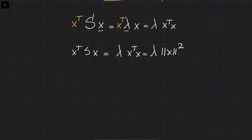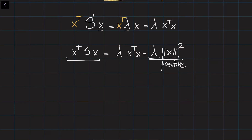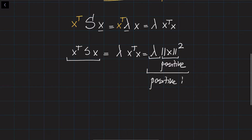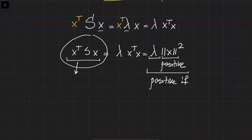On the left-hand side I have this multiplication. On the right-hand side, I am multiplying an eigenvalue by some positive number, because the norm of a vector is always positive. So if X-transpose S X is positive for all possible non-zero vectors X, then lambda is going to be positive as well. That is the condition for a symmetric matrix.